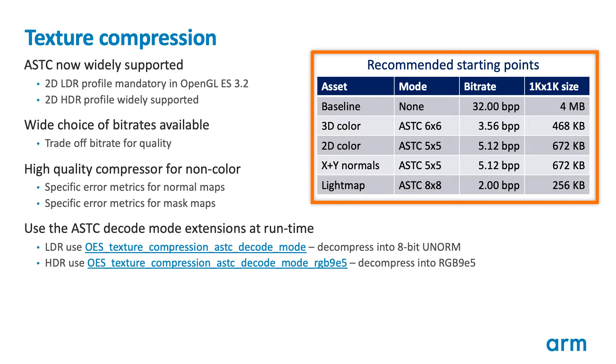The recommended starting bitrate depends on the resource being compressed. For 3D object albedo and diffuse textures, we'd recommend starting with 6x6 blocks, which store at 3.56 bits per pixel. This is 10% smaller than ETC2 but still generally gives better image quality. Generally, textures used for 2D UI overlays and 3D normal maps need higher quality than 3D object albedo textures, so we're recommending increasing the bitrate to 5.12 bits per pixel using 5x5 blocks. Conversely, pre-baked lightmaps are often low-frequency textures and so can get away with lower bitrates, such as 2 bits per pixel using 8x8 blocks.